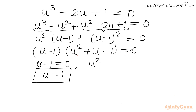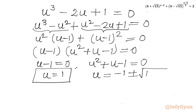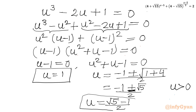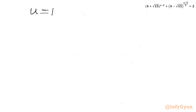So the conclusions are: u − 1 = 0, giving u = 1; and from the quadratic u² + u − 1 = 0, applying the quadratic formula gives u = (−1 ± √5) / 2. We reject the negative value since u must be greater than 0, so the accepted value is u = (√5 − 1) / 2.